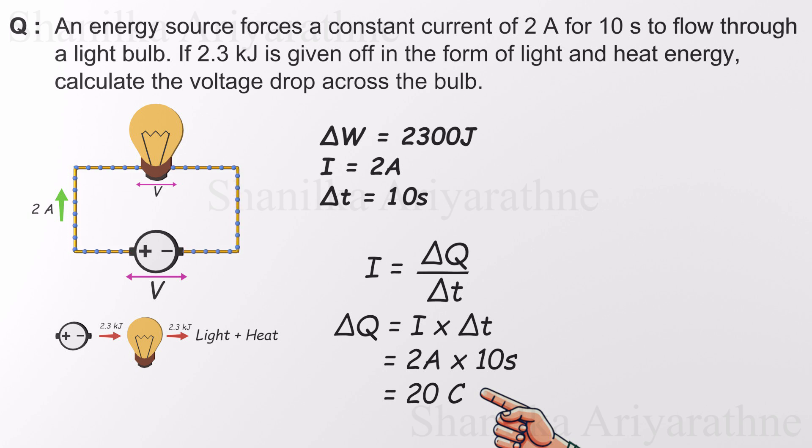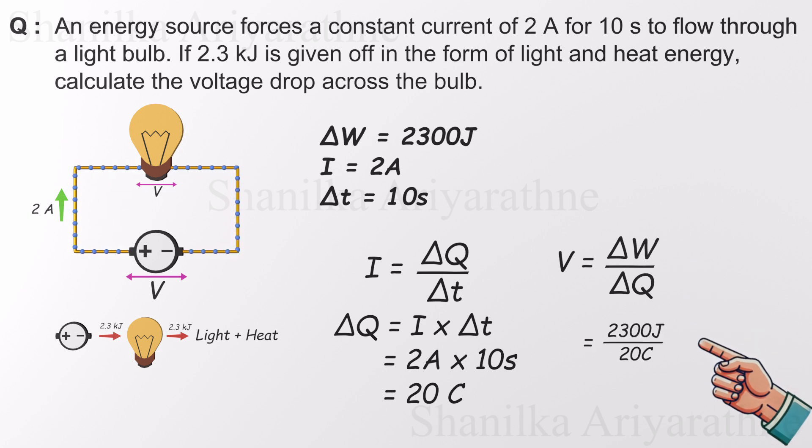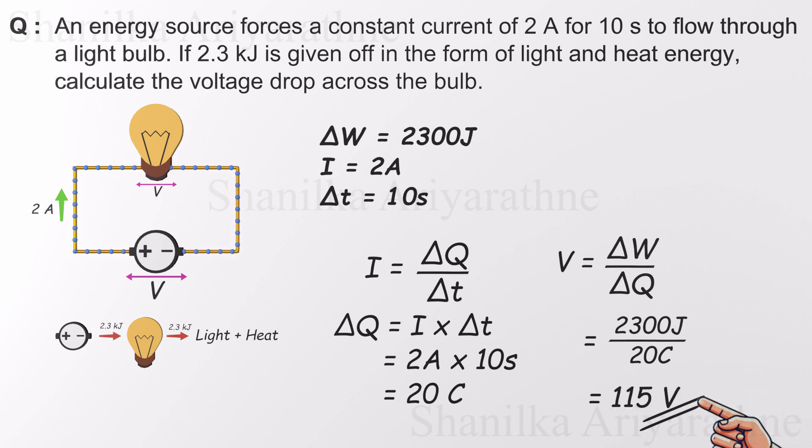Here's the key idea. It took 2,300 joules of energy to push those 20 coulombs through the bulb. That energy came straight from the power source. Now we can calculate the voltage using the definition. Voltage is just energy divided by charge. So, V is 2,300 joules divided by 20 coulombs. The answer is 115 volts.